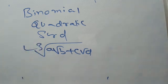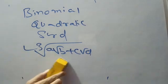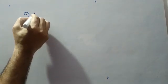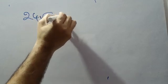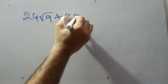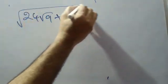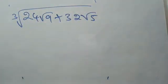We will see how to apply the shortcut and get the cube root value for this Binomial Quadratic Surd. I am taking an example here: 24√9 plus 32√5. This is a Binomial Quadratic Surd.